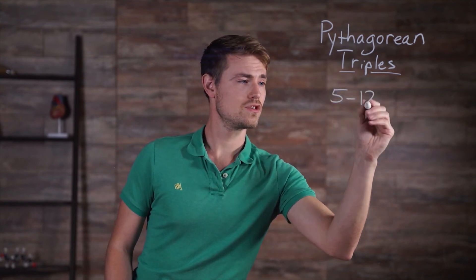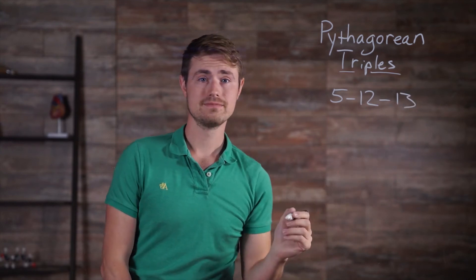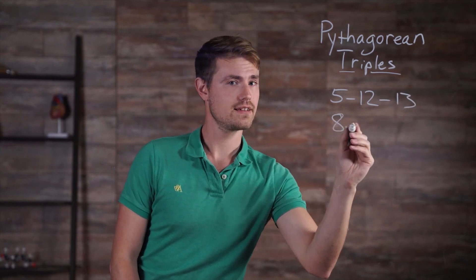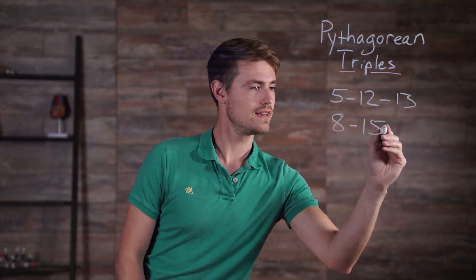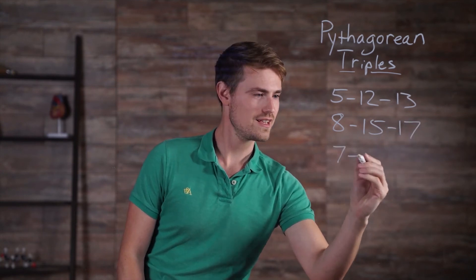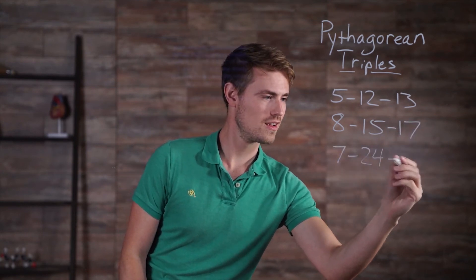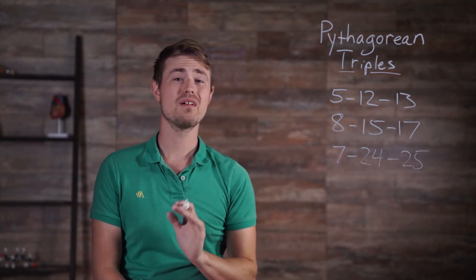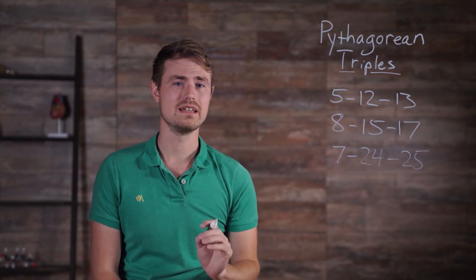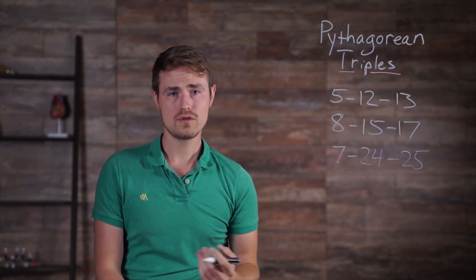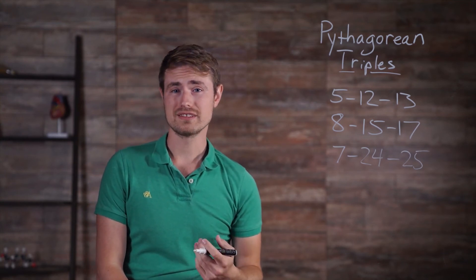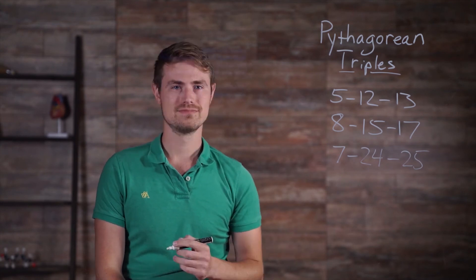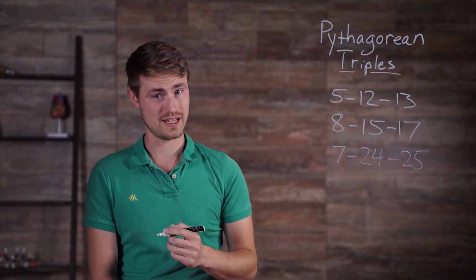Other Pythagorean triples include 5, 12, 13, 8, 15, and 17, and 7, 24, 25. There are many more, but these ones are the ones you will see most often. Of course, there are right triangles that aren't Pythagorean triples. Let's look at one just so we can see what the answer will look like.